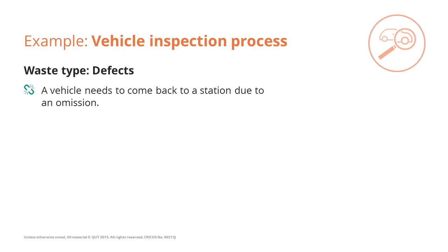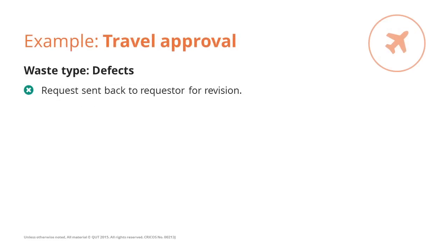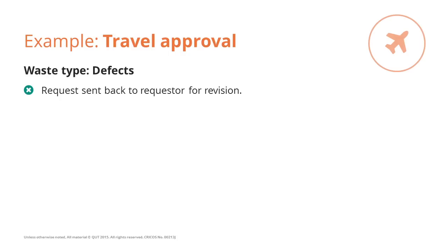In the context of a travel requisition approval process, an example of defect waste is when a travel requisition request is sent back by the approver to the requester for revision because, for example, certain information was missing.